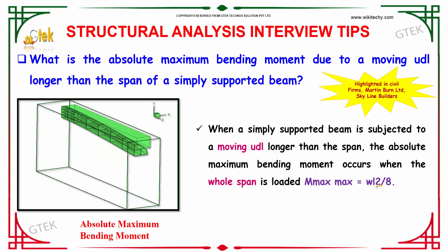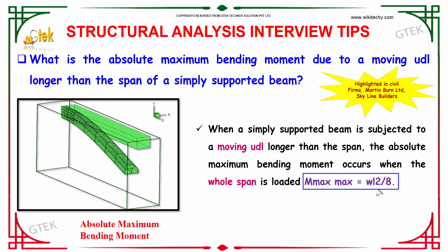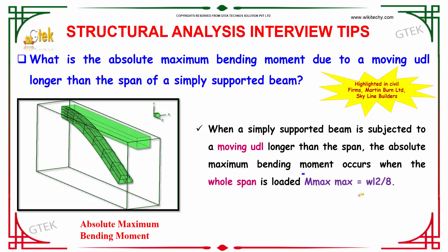Mmax is equal to WL squared by 8. This is the condition at which the maximum bending moment occurs — when the whole span is loaded — and the absolute maximum bending moment occurs at this point.